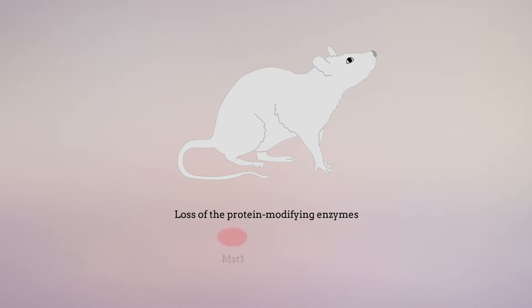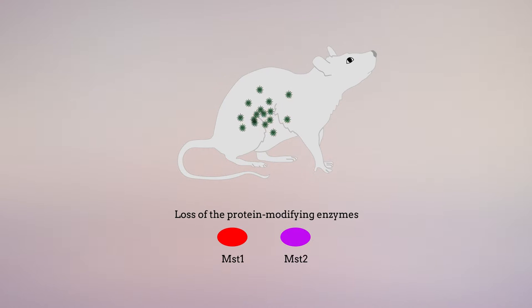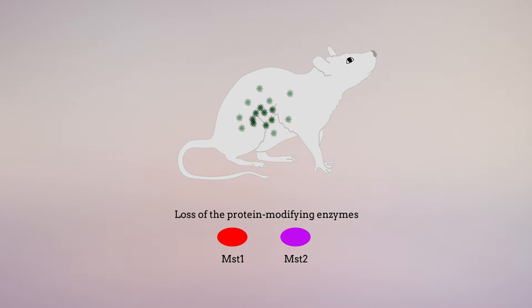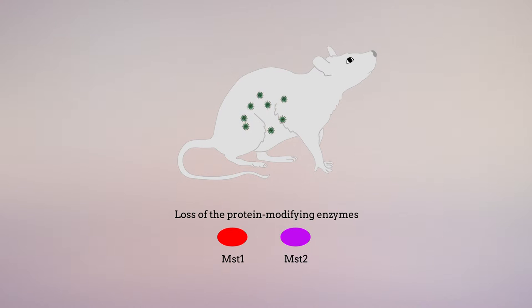In this study, the researchers found that the simultaneous loss of the protein-modifying enzymes MST1 and MST2 in immune cells of mice resulted in repeated bacterial infection and early death. This finding prompted further study of the roles of MST1 and MST2 in the RAC1-mediated destruction of bacteria by phagocytes.